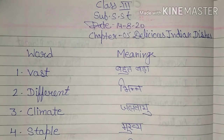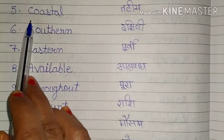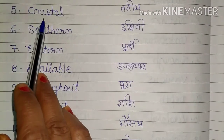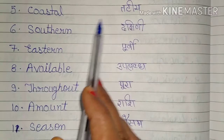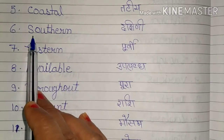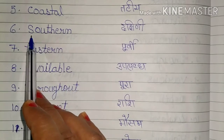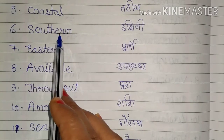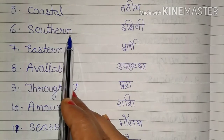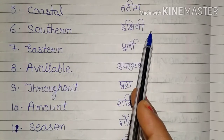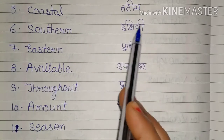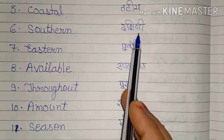Staple, S-T-A-P-L-E. Staple का मतलब होता है मुख्य — main. Coastal, C-O-A-S-T-A-L. Southern, S-O-U-T-H-E-R-N. Southern means Dakshini — दक्षिण की ओर का होता है, तो उसे Dakshini भी कह सकते हैं।